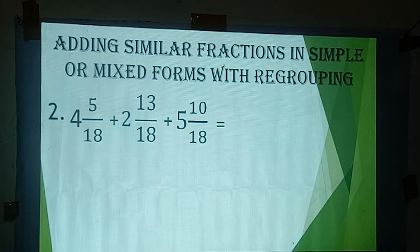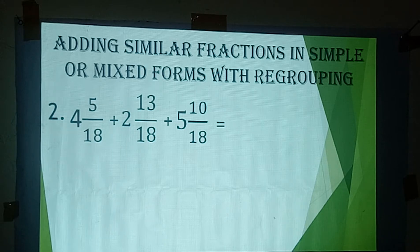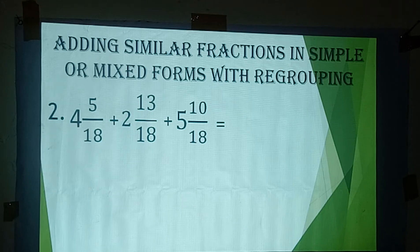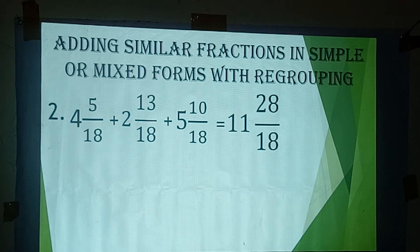So 4 plus 2 plus 5 equals 11 for the whole numbers, and 5 plus 13 plus 10 equals 28 for the numerators. That gives us 11 and 28 over 18.